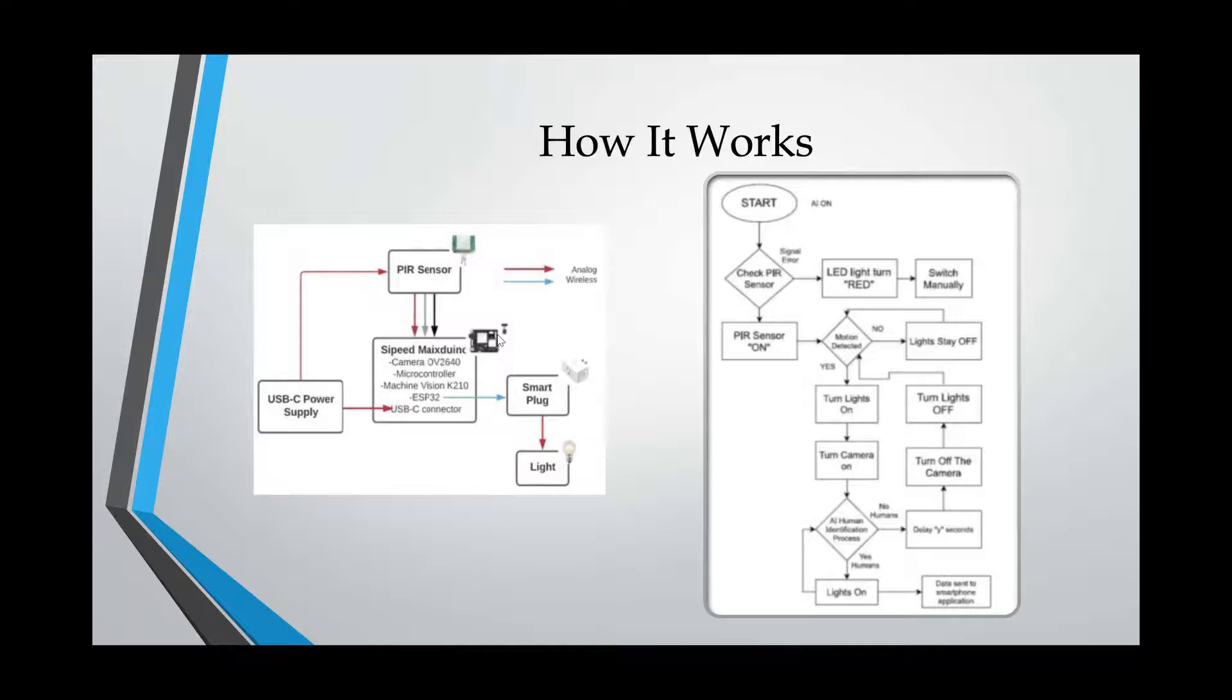And on the right, we have our software block diagram. First, like I said, the PIR sensor would detect a signal. If there's no signal, the lights would stay on. If there is a signal, the AI module would detect if it was human or not. And if it's a human, the lights would stay on. If it's not a human, like for example, a dog or an animal or a shadow, it would turn off.